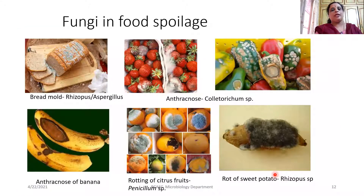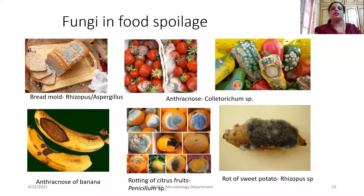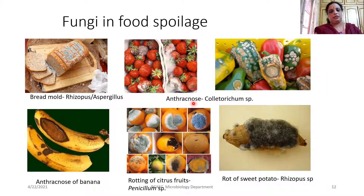Fungi play a major role in spoilage of food, as we would have seen in our day-to-day life. Bread gets infected by Rhizopus and Aspergillus. Anthracnose also affects fruits and vegetables, where you can find water-soaked lesions formed during post-harvest storage. If storage is not properly maintained, anthracnose can be observed, especially due to the infection with Colletotrichum species.